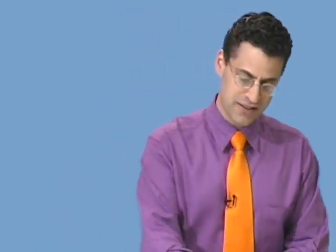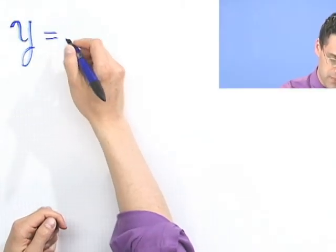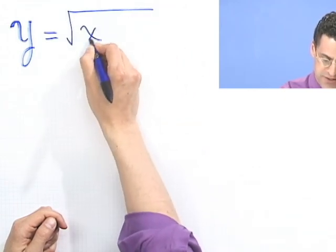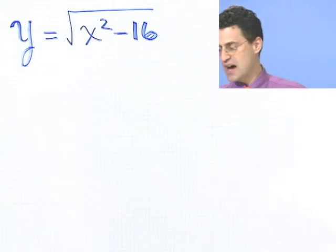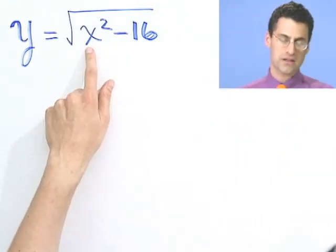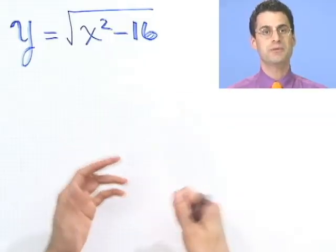So here's an example to sort of illustrate this. Suppose I tell you that y is equal to the square root of x squared minus 16. And the question is, I want to know for which values of x is this whole thing defined. Now, you may remember this is called the domain. So the domain is just the collection of x's which make this thing defined, which means the collection of x's that I can plug in here for which this thing would really be a number.